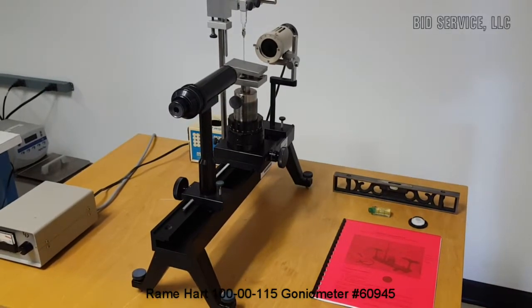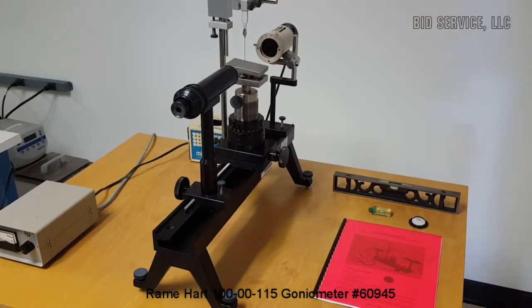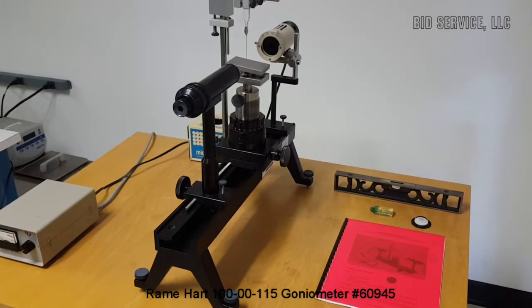The goniometer was first described in 1538 and has typically been used for surveying, communications, and in this case, contact angle.